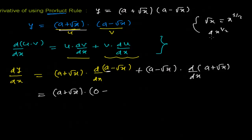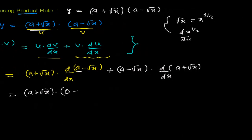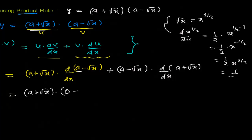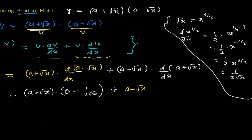You know, √x is x to the power 1/2. The derivative of x^(1/2) using the power rule — bring the power down: (1/2) times x to the power (1/2 − 1) = (1/2) x^(−1/2), which is 1/(2√x). So I'm going to directly use 1/(2√x) here. Similarly, for (a − √x), the derivative of the constant is zero, and the derivative of √x is again 1/(2√x).